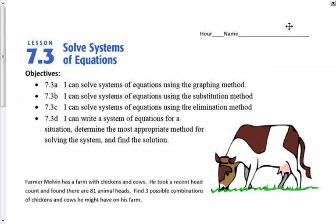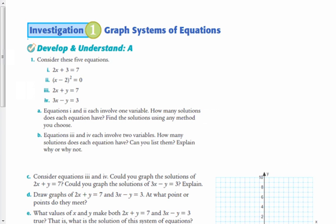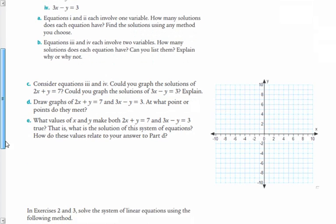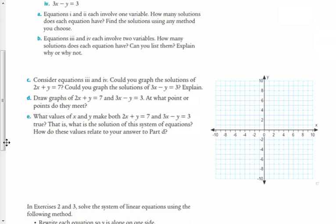We're going to go right away to page 2 in your packet here, and we're going to look at number 2. It says, consider the equations 3 and 4. Could you graph the solutions of 2x plus y equals 7? Could you graph the solutions of 3x minus y equals 3? Explain. The answer is yes. Those are just linear equations, so the graph would be a line.